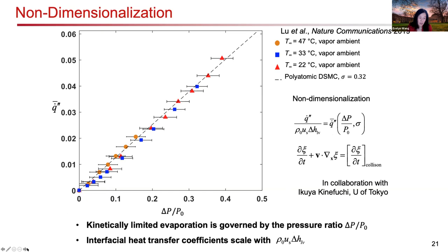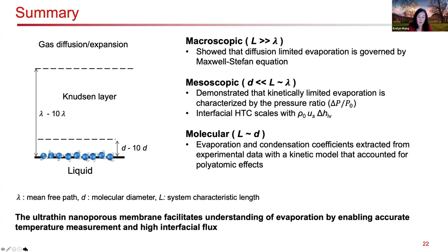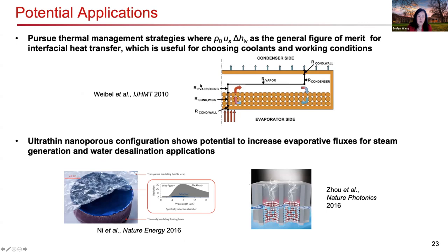Not only have we elucidated this kinetically limited regime experimentally, but we now have a nanoporous membrane platform that helps us understand how to actually design devices operating in this regime. For example, in a heat pipe system with a pure vapor ambient, this figure of merit helps us choose the working fluid and working conditions to maximize interfacial heat transfer. We can also think about configurations using this nanoporous design to increase evaporative fluxes for steam generation and water desalination.